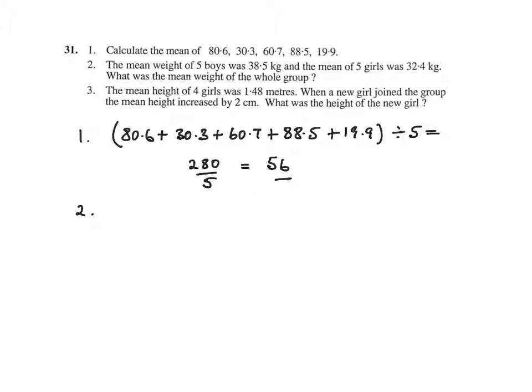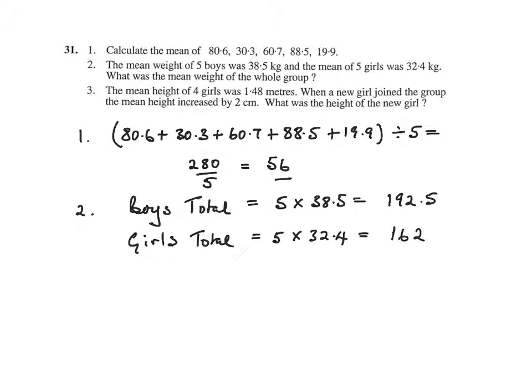Question 2. The mean weight of 5 boys was 38.5, so the boys' total weight is 5 times 38.5, and the girls' total is 5 times 32.4, which gives us 192.5 and 162 kilograms. So the total for the whole group is 354.5 kilograms. The mean for the group is 354.5 divided by 10, which is 35.45 kilograms.